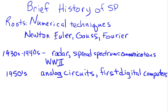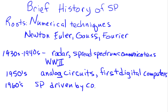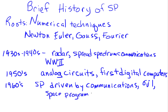As we moved on into the 60s, signal processing was driven by large industries — by the communications and oil exploration and the space program as well, going to the moon. Because the availability of the types of computers that could perform signal processing was limited to fairly large industries.